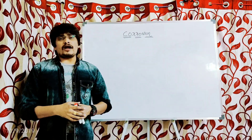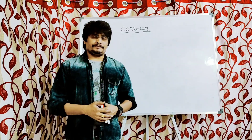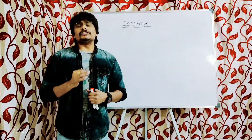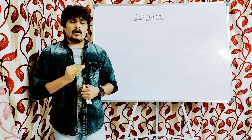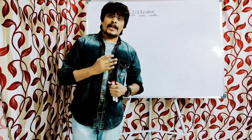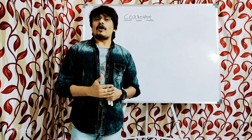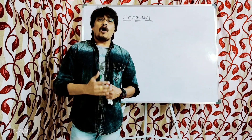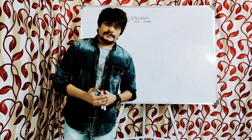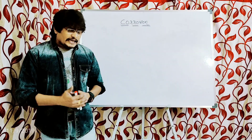Hi students, as a part of engineering chemistry I'm going to discuss the second part of unit 3, which is corrosion. Corrosion is the gradual destruction or deterioration of a metal due to unwanted chemical or electrochemical interaction with its environment. Destruction means damage of the metal, and deterioration means losing the quality of the metal.